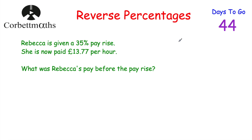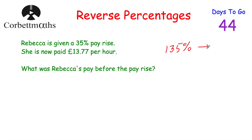There are four questions in this video and I'm going to do each one using both approaches. So our first question: Rebecca is given a 35% pay rise and she's now paid £13.77 per hour. What was Rebecca's pay before the pay rise? It's gone up by 35%, so that means we've now got 135%, and that equals £13.77.